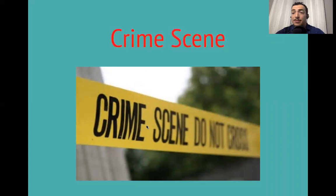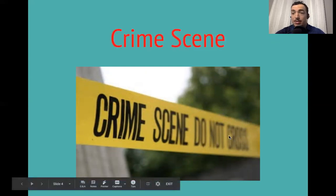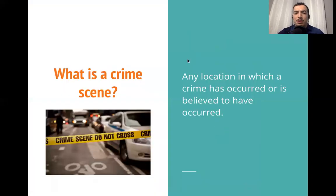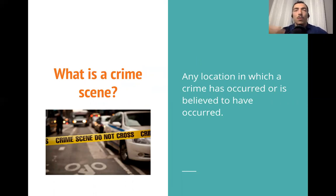You may recognize the crime scene with the yellow tape — you may have seen it in movies or TV shows, or maybe you've never seen it at all and you're seeing it right now. So what is a crime scene? A crime scene is any location in which a crime has occurred or is believed to have occurred. A crime can happen there, or there's enough evidence, enough clues and hints, to think that the crime has occurred there.